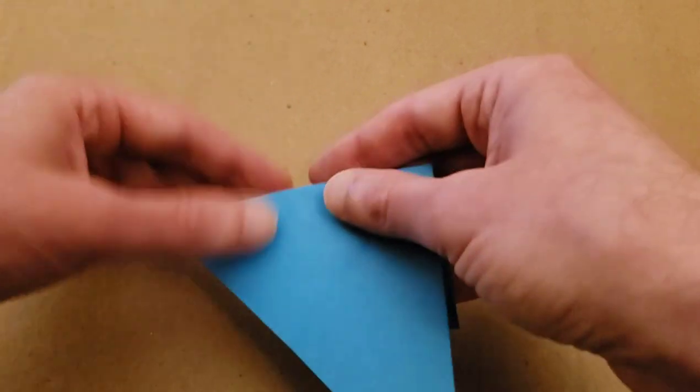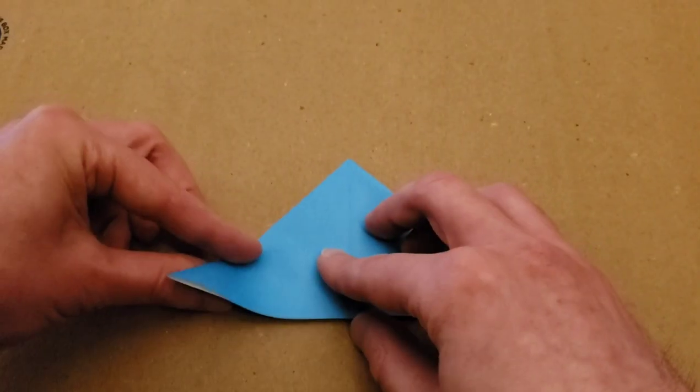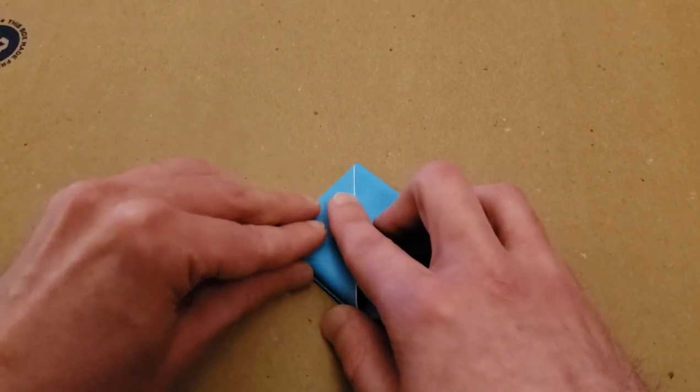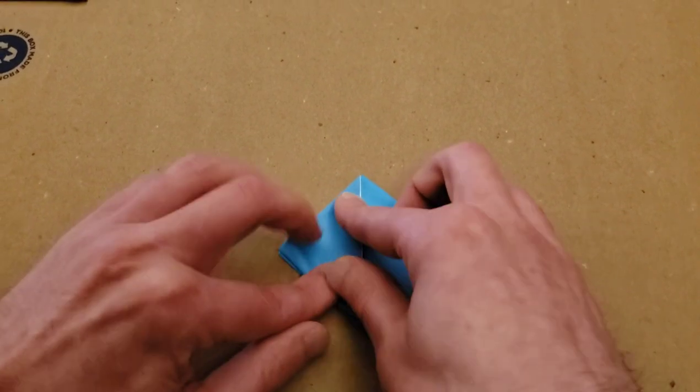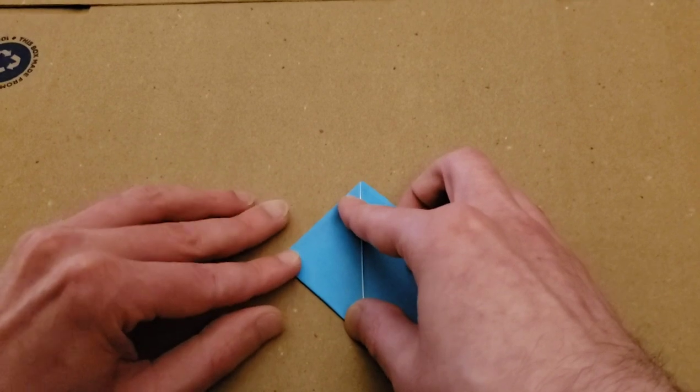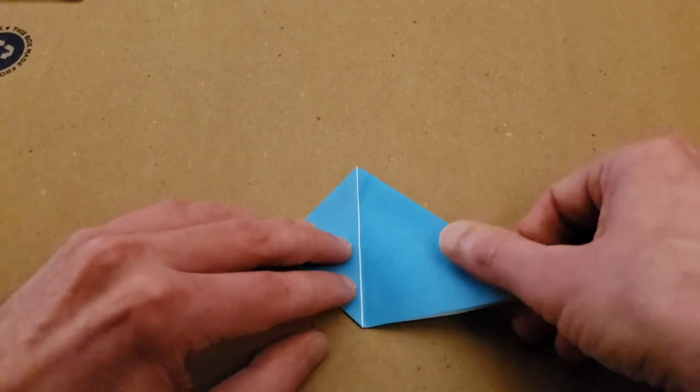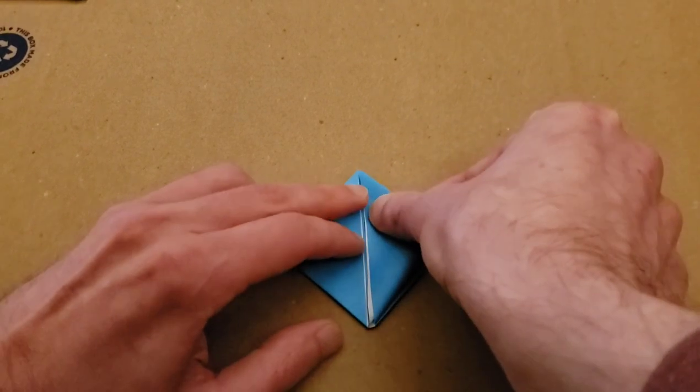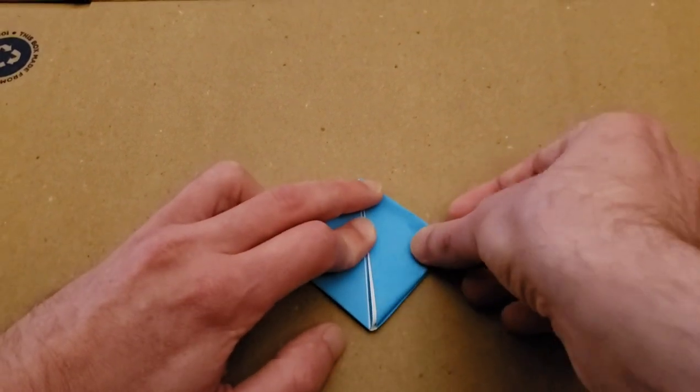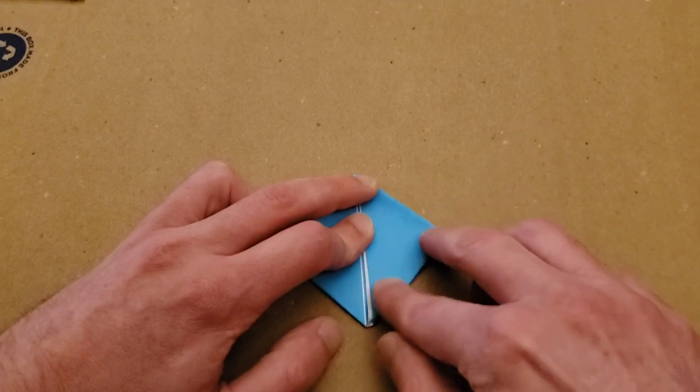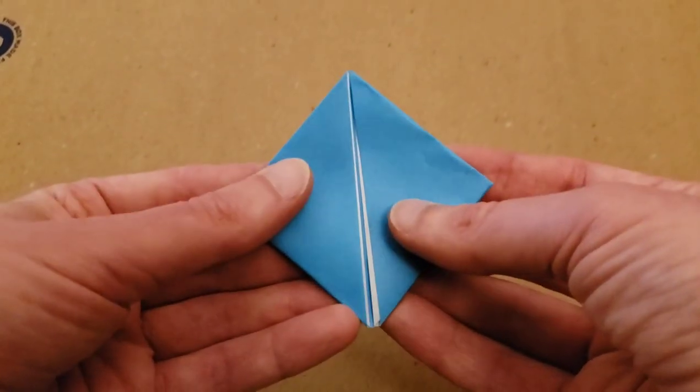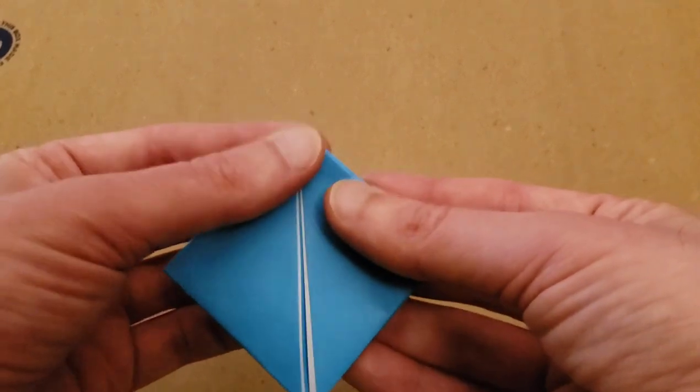Flip your piece over and do the exact same thing. Tip to tip. And then tip to tip. There we go. Now my folds were not perfect, so you can see the white, but you know what? That's okay.